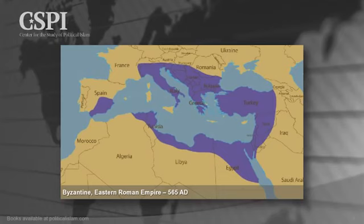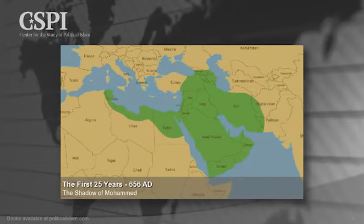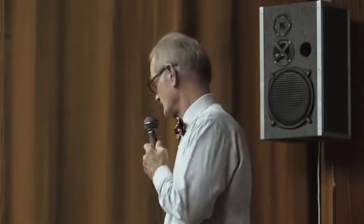On our next slide, we see what happened in 25 years after Islam invaded the classical world. How did they spread so far, so fast? North Africa, the Middle East — how did this happen? A good explanation is generally not given. It collapsed so fast.